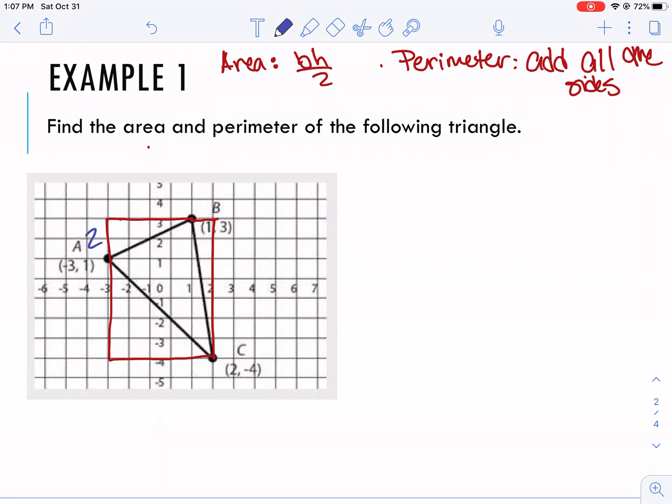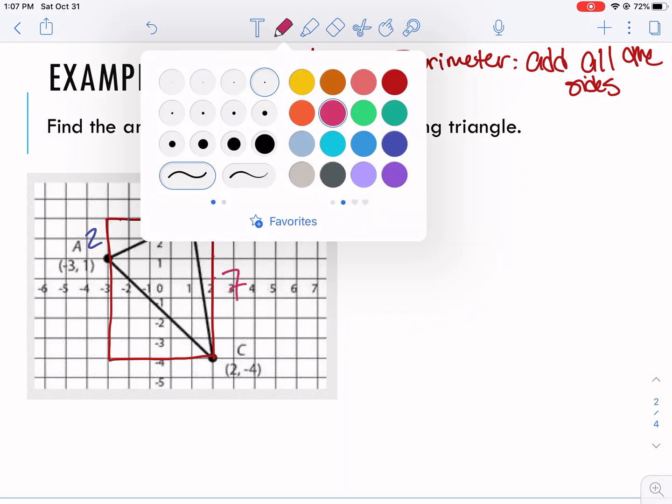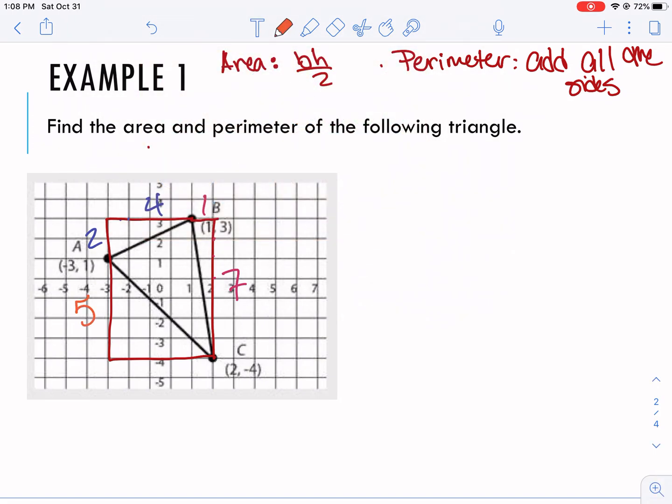Our first step after we draw our box is to label all the side lengths for these three little right triangles that I created. This side is 4, this is 7, and this one's 5 and 5. So let's start with perimeter.